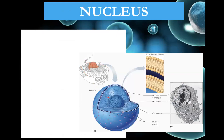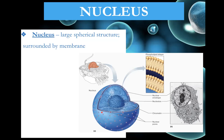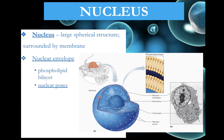Now we come to the nucleus, where DNA is held. It is usually one of the largest parts of the cell and sits toward the middle. The dark spot in the middle is the nucleolus. The nucleus is surrounded by the nuclear envelope, which is actually a double layer — like a double plasma membrane. It has nuclear pores that allow things to pass through, notably proteins, hormones, and mRNA going out.